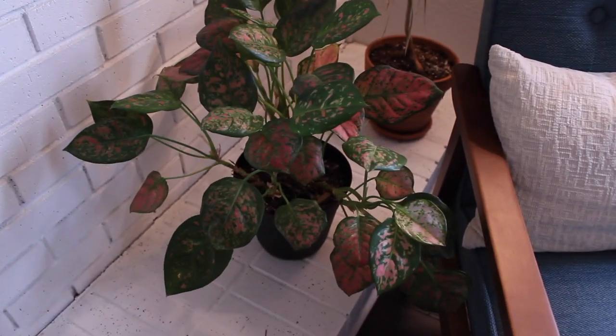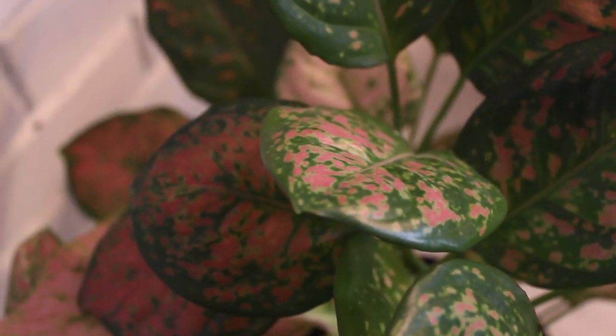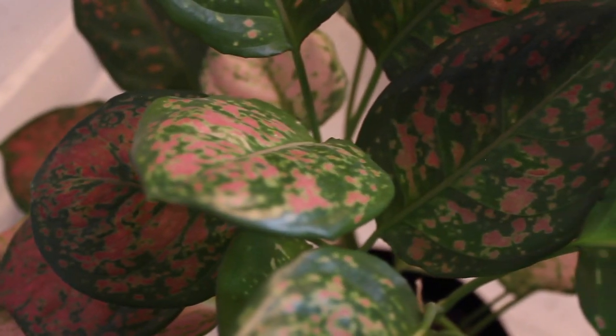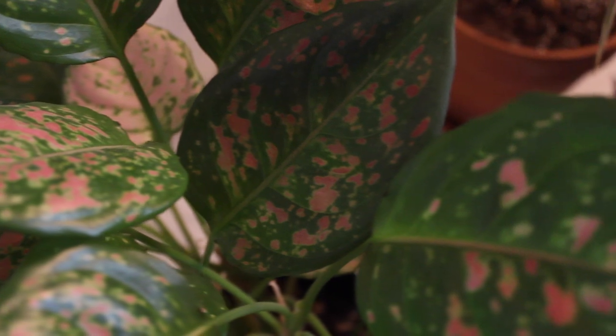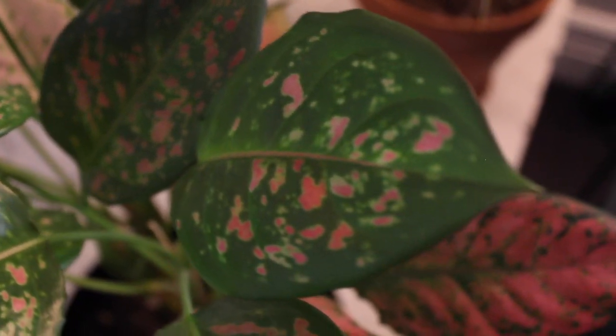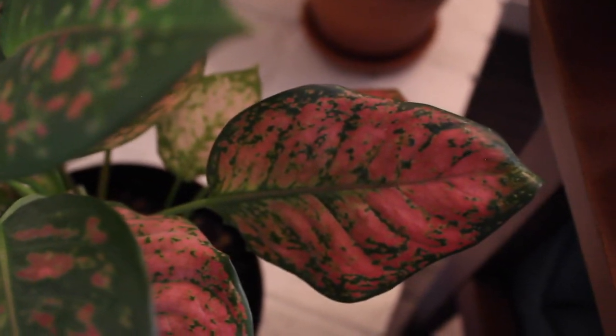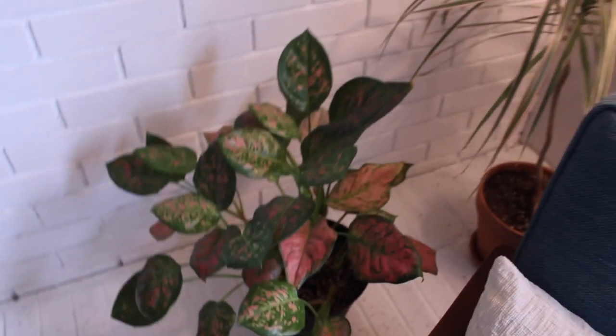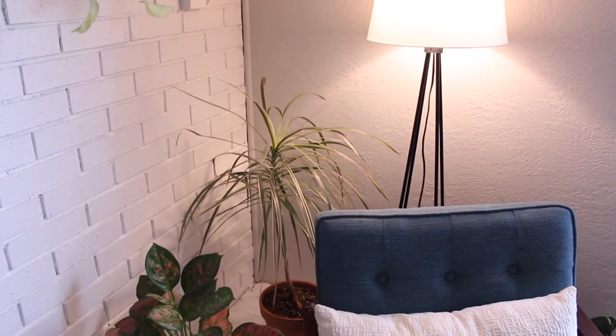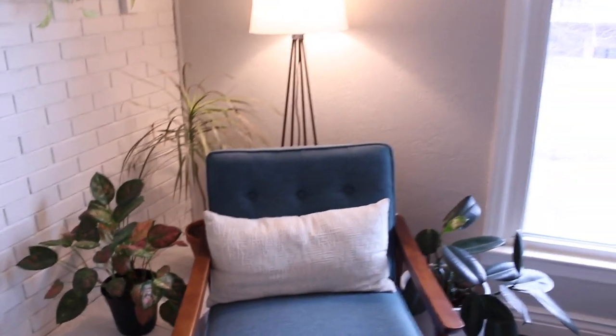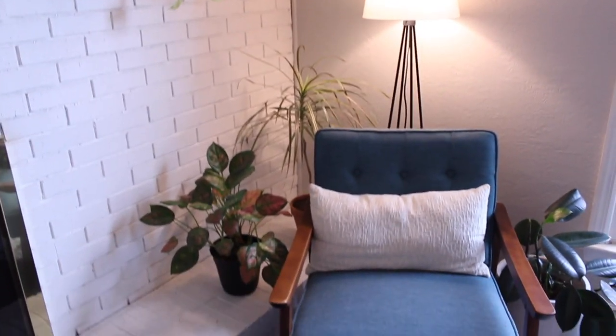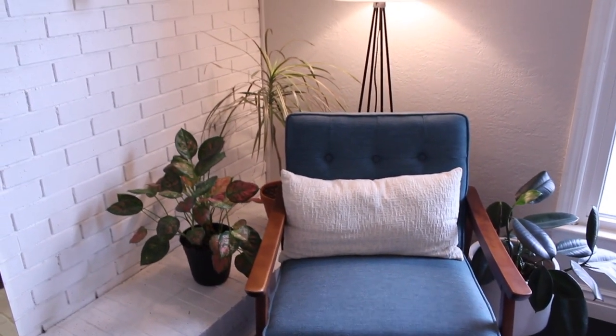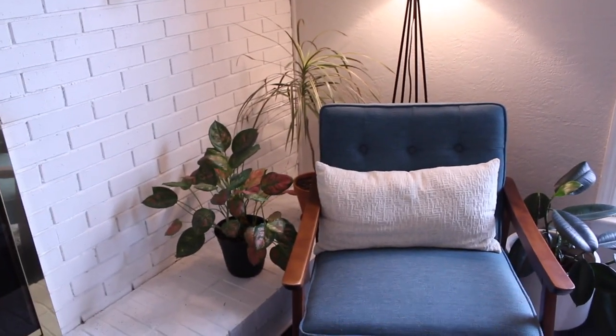Next to that I have this - I think it's an aglaonema Valentine, but I am not sure. It has these beautiful green and pink leaves and does fairly well in this spot. Along with the dracaena, it doesn't actually get too much light. We don't keep this lamp on very often, but it's just to the left of the window and seems to do well with some pretty low indirect light.